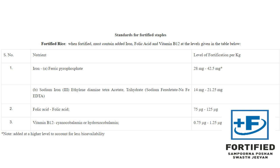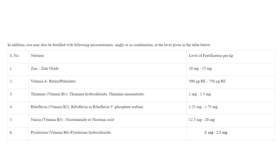The standards for fortified staples: fortified rice should contain iron (as sodium iron EDTA), folic acid, and vitamin B12 — the quantities are listed on the right side: 28 mg, 14 mg, 75 mcg respectively. In addition, rice may also be fortified with zinc oxide, vitamin A, thiamine, riboflavin, niacin, and pyridoxine.